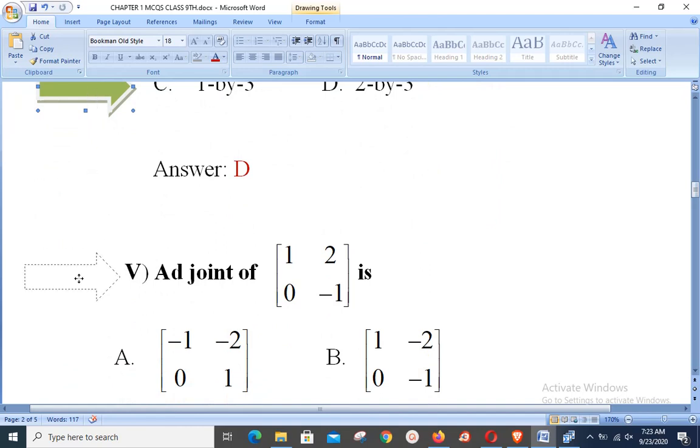Adjoint of [1 2; 0 -1] is dash. Viewers, adjoint is calculated like: looking at the main diagonal entries, we interchange them, and the remaining diagonal entries, we just change the signs. That means minus 1 will take place of 1, and 1 will take place of minus 1.